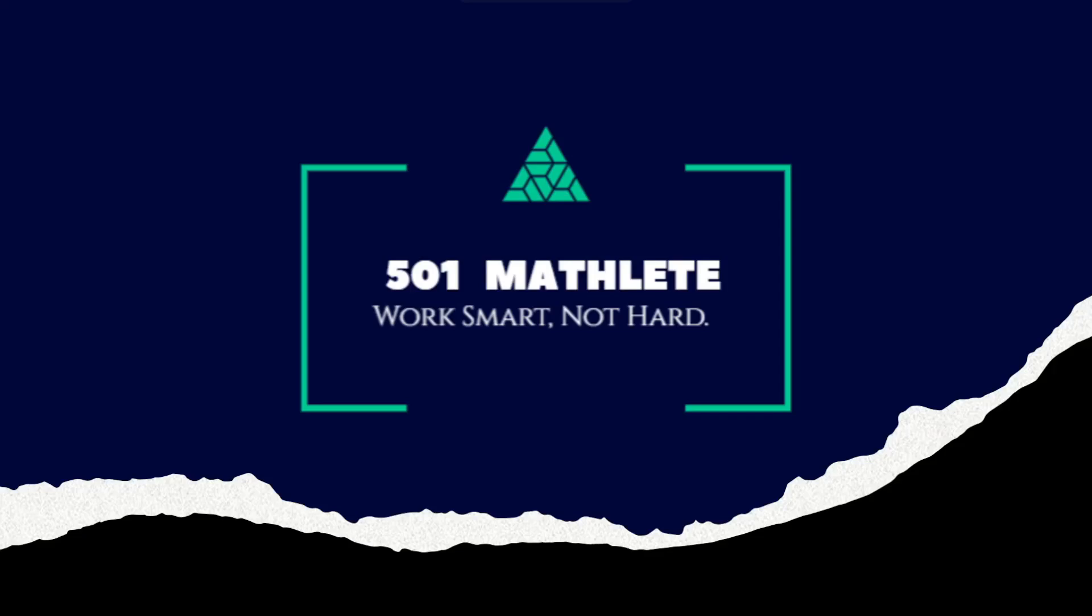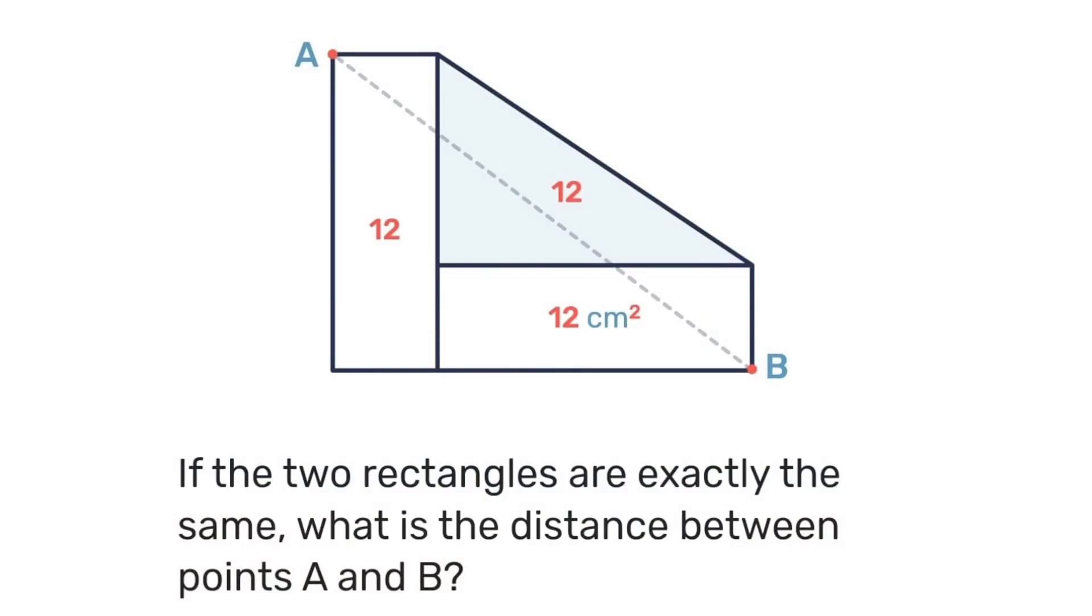Good day and welcome to 501 Matly where we work smart not hard. In today's problem we're given this diagram of two rectangles and one triangle. We're told that both rectangles are exactly the same and we also know that the area of the triangle is 12 square millimeters as well as the area of both rectangles. With that we're to determine the distance between points A and B.